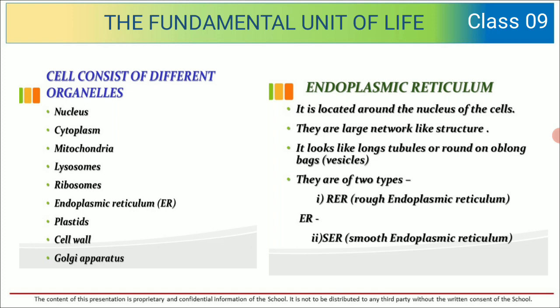First, let us talk about the endoplasmic reticulum. It is located around the nucleus of the cell. They are large network-like structures that look like long tubular structures — tubules, round and oblong sacs. They are of two types: rough endoplasmic reticulum and smooth endoplasmic reticulum.